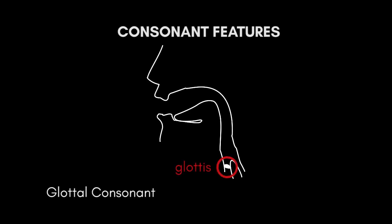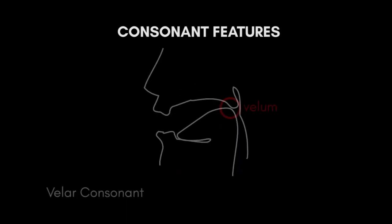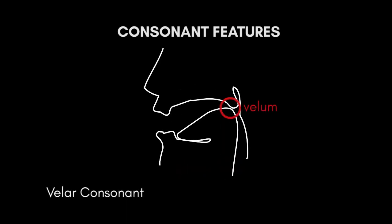First, the place of articulation. This feature distinguishes phonemes depending on which part of the mouth we produce the sound. The glottal sound, such as [h], is produced in the back side of the mouth, in the vocal tract, or more specifically in the glottis. Velar consonants happen when you raise the back of your tongue to the velum to block or restrict air flow.